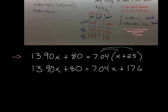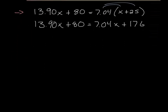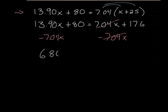What we need to do now is combine our x's together. I'm going to subtract 7.04x from both sides of this equation, so that I can cancel out the x's on the right-hand side. On the left-hand side, I got 13.9x minus 7.04 — using my calculator, 13.90 minus 7.04 — and what I get is 6.86x. So I get 6.86x plus 80 equals 176 on the right-hand side.